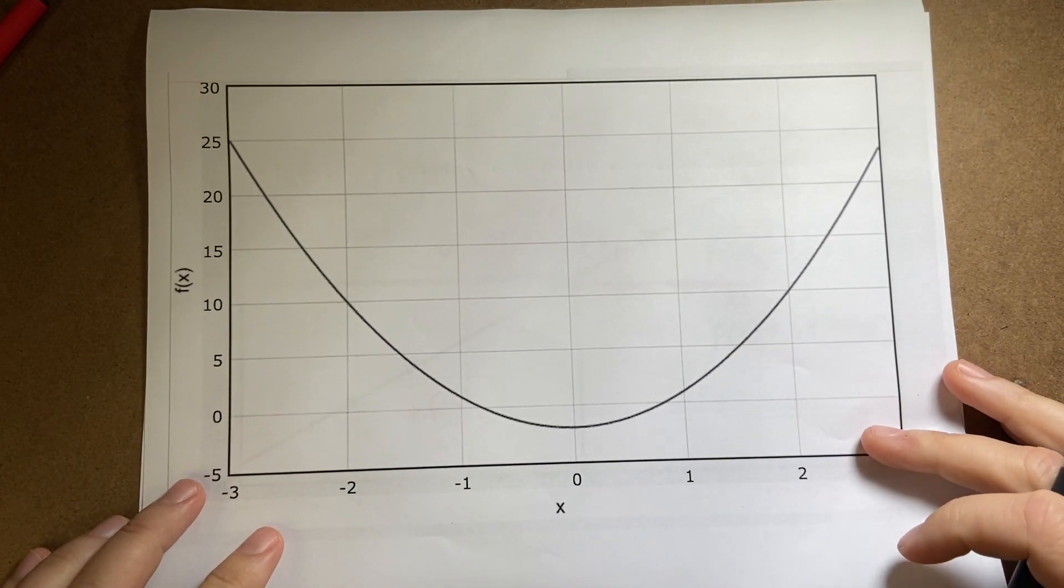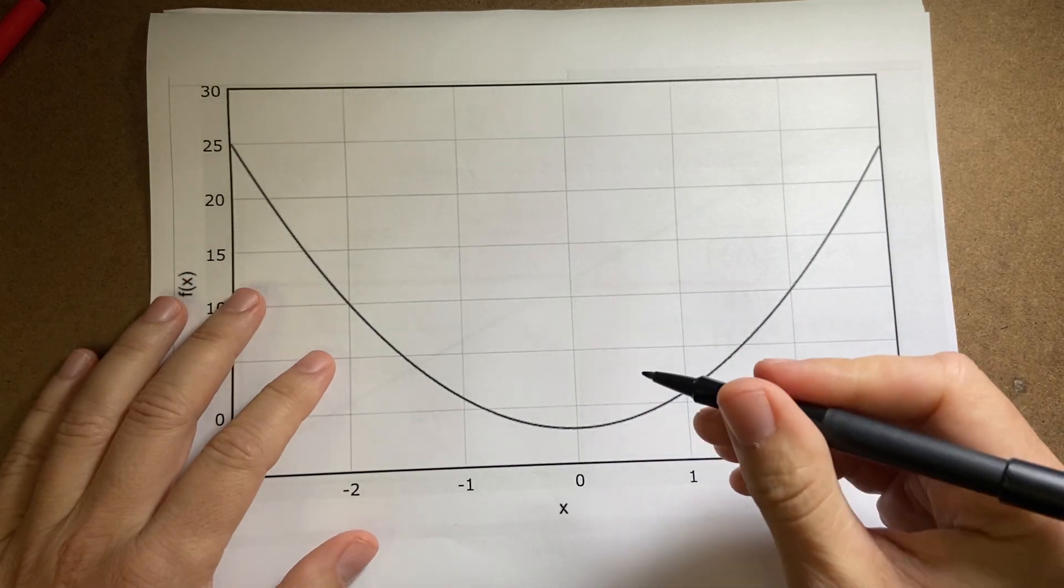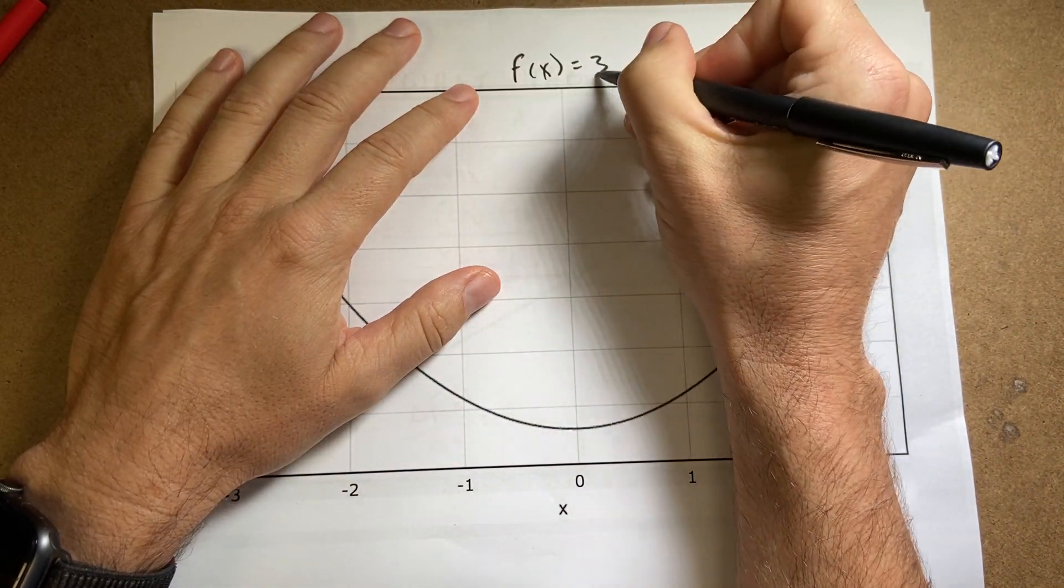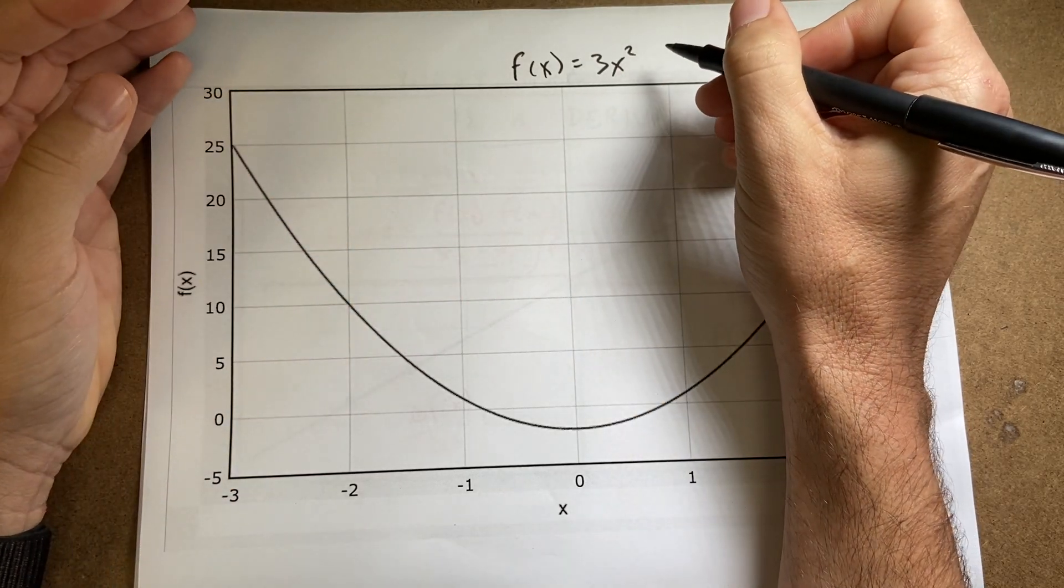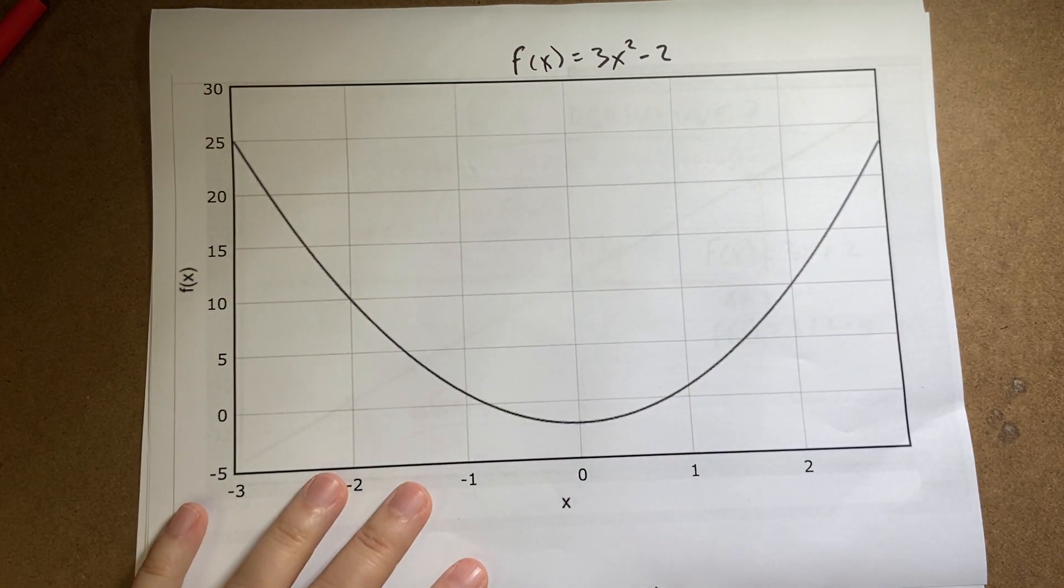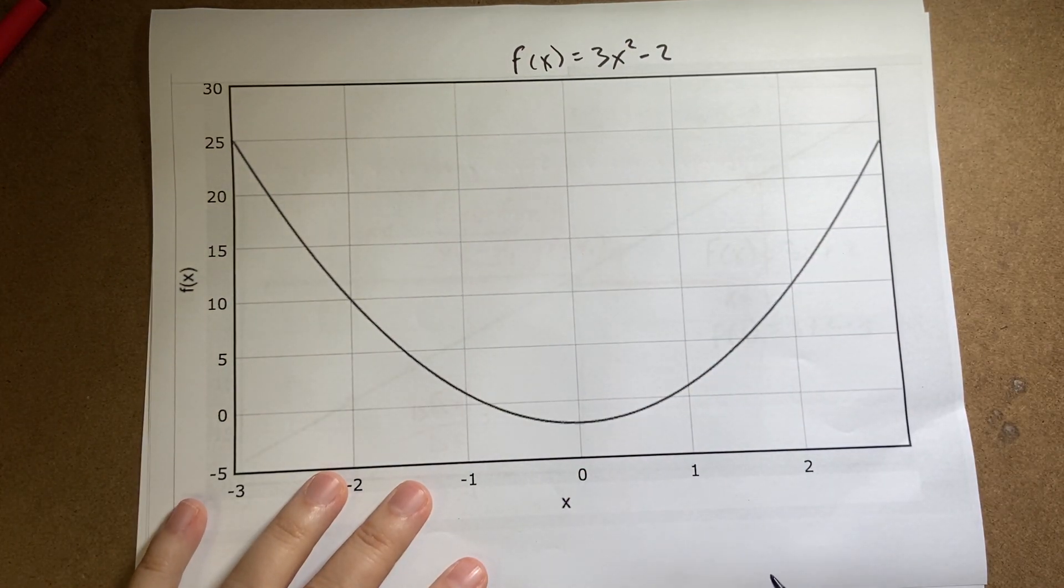Here is another function. And I think, I actually printed this. I think this is f of x equals 3x squared minus 2. Yeah, I had to check. Okay, that's my function. And so what's the slope of this function?